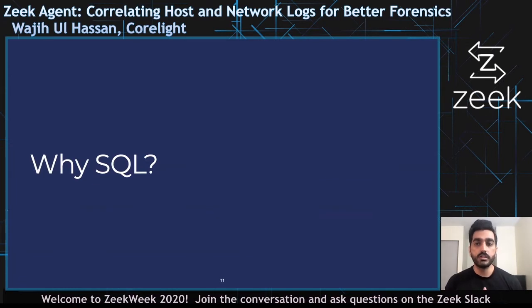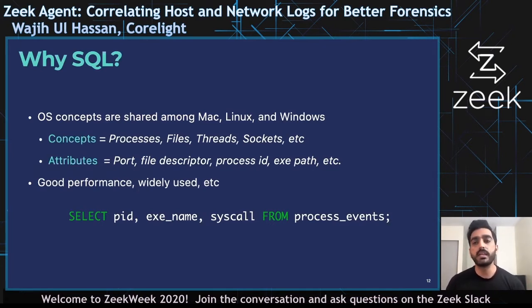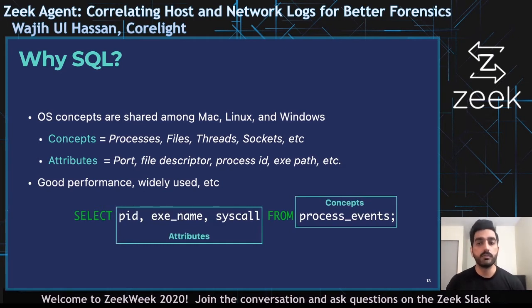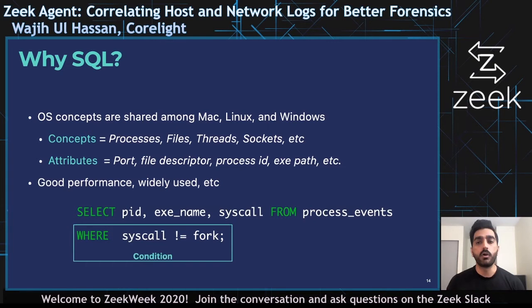Before explaining those three components, I will first describe why Zeek Agent uses SQL to introspect OS state of the host, similar to OSquery. The reasoning is quite simple: SQL enables Zeek Agent to use a single query to collect host events from different operating systems. This is possible because operating system concepts are shared among different OSes — for example, processes, threads, files, and sockets — and their attributes are pretty much the same across operating systems, such as PIDs and TIDs for process events. For example, Zeek Agent can use a SQL query to fetch PID, image path, and other fields from process event tables across different operating systems. You can also add constraints on what kind of events you want — for example, we can exclude all fork process events from our query.